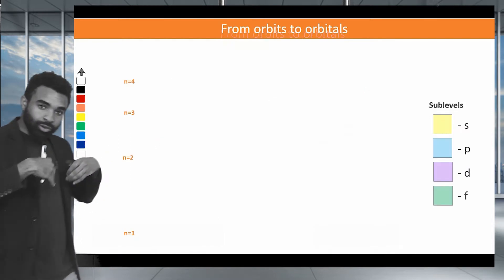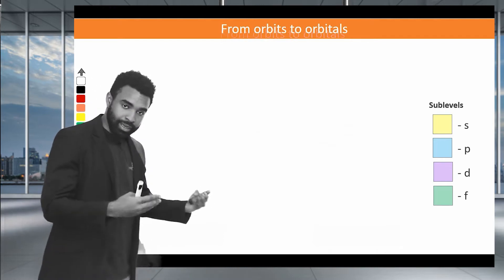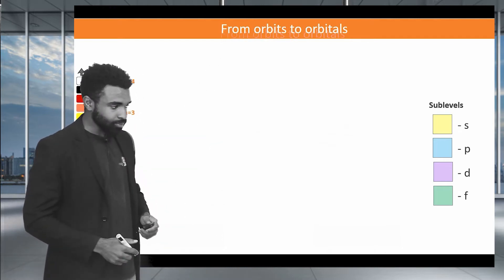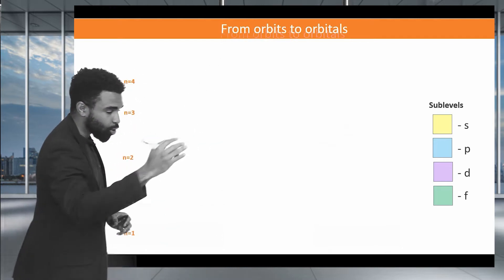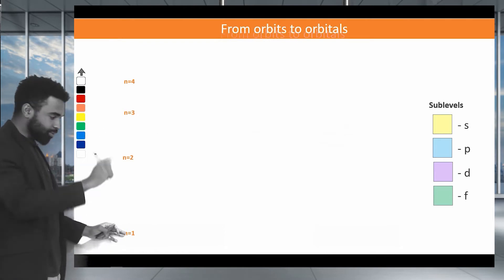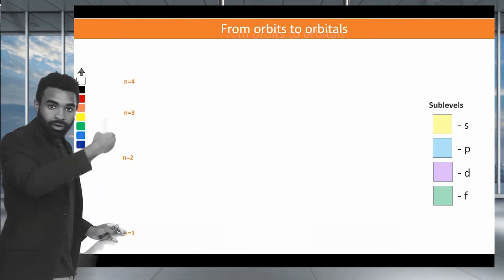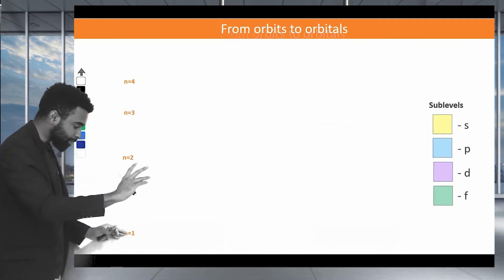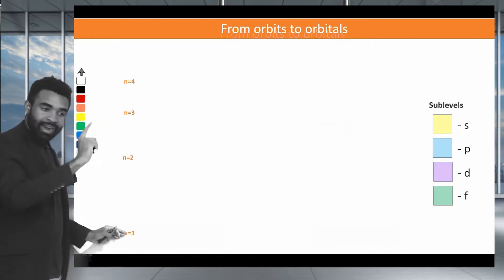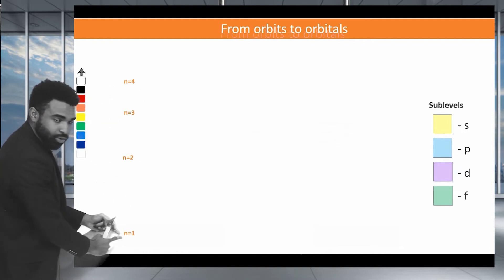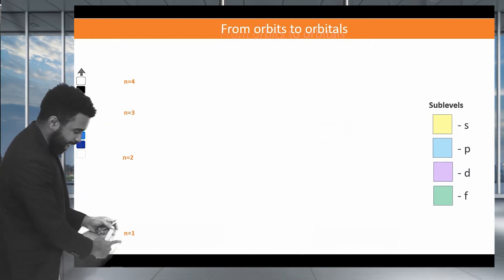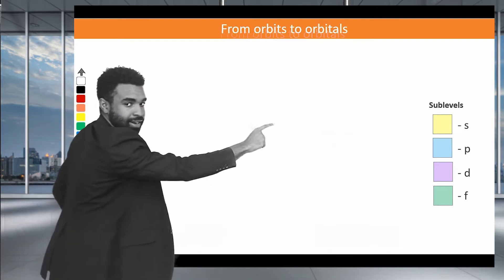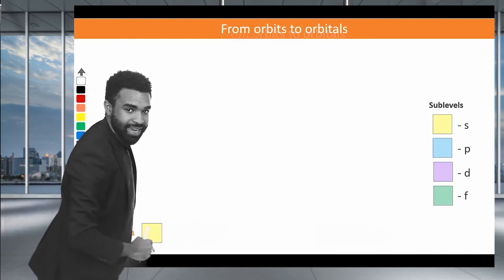The alternative model, which is what you need to understand for the IB, is called the orbital model. Within the orbital model, instead of just one, two, three, four shells, we have what are called sublevels. So we have the main levels and the sublevels. The sublevels are S, P, D, and F.